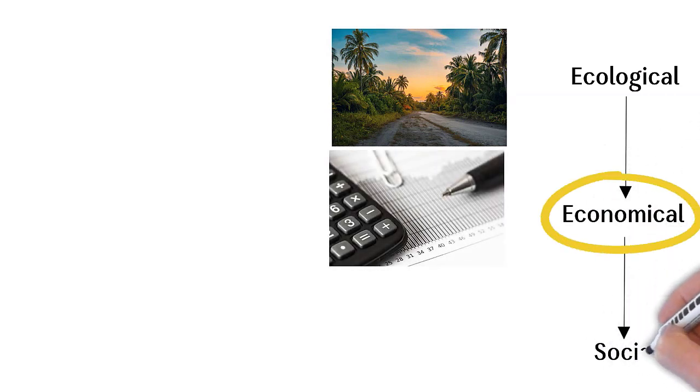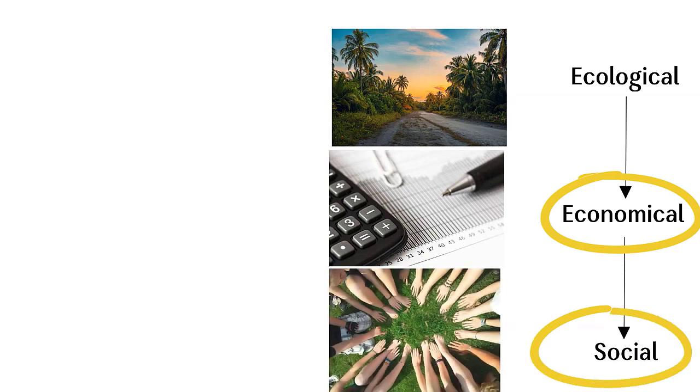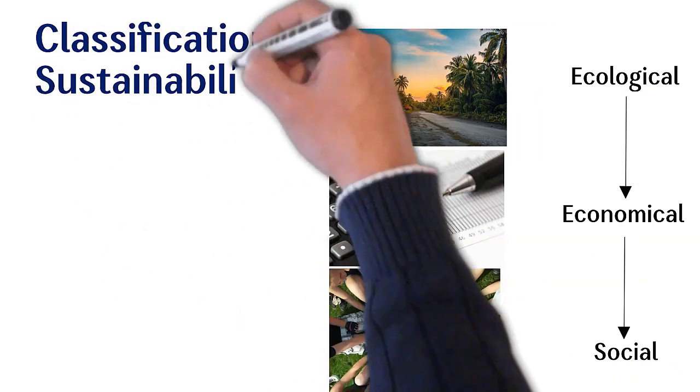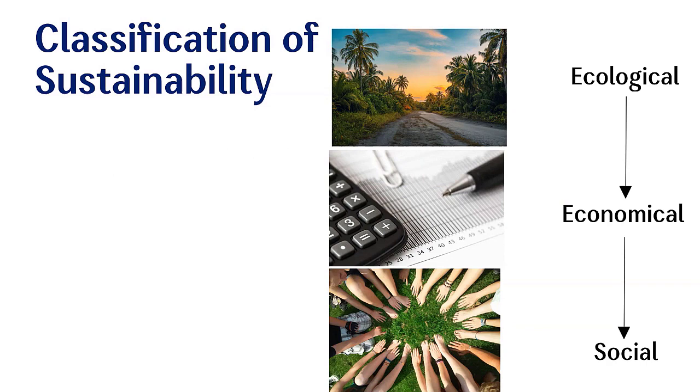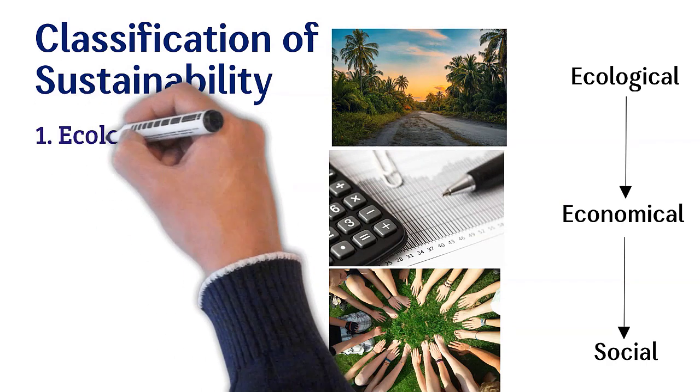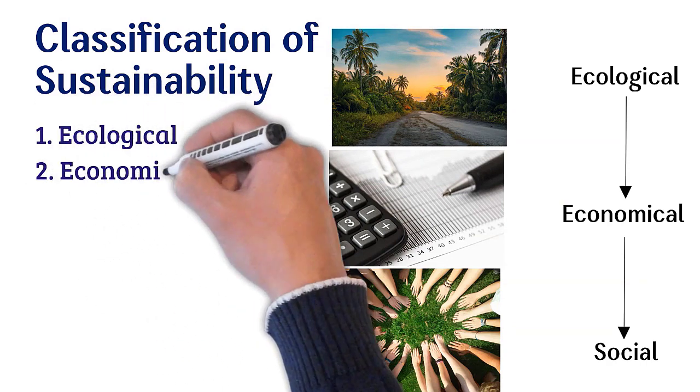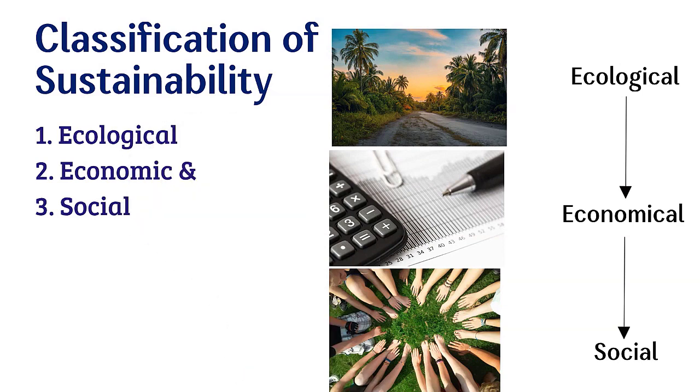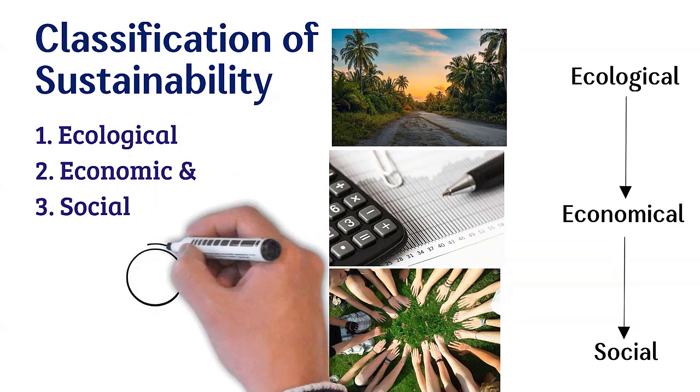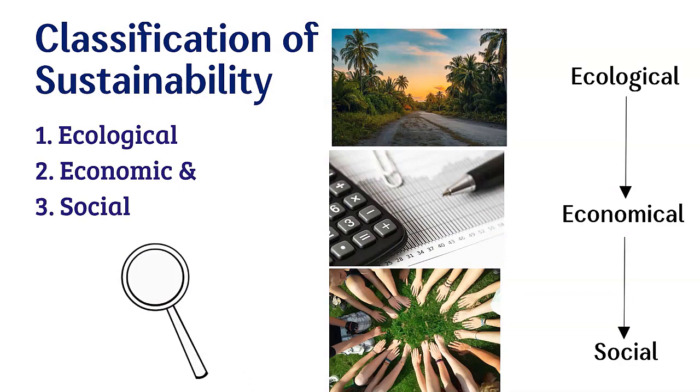Classification of sustainability: Sustainability can be classified into three types - ecological, economic, or social. These three types are broadly the classification on the basis of which of the effects or processes we are looking at.